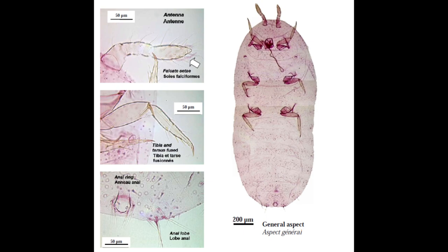As of 2005, according to the European and Mediterranean Plant Protection Organization, known as the EPPO, there is no key for the genus Rhizoecus, which requires revision.